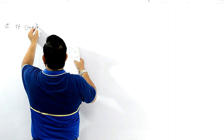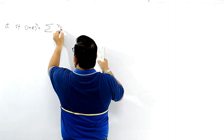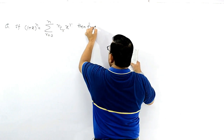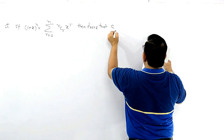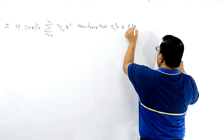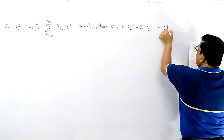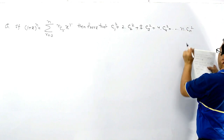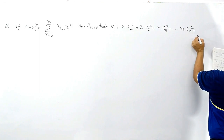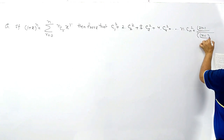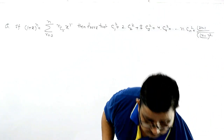Now I am getting one more question: if (1+x)ⁿ equals summation of nCr · xʳ, r equals 0 to n, then prove that c₁² + 2c₂² + 3c₃² + 4c₄² + ... + n·cₙ² equals (2n-1)! divided by ((n-1)!)².